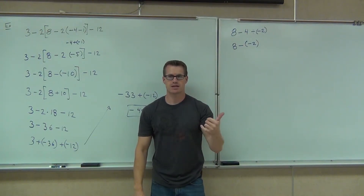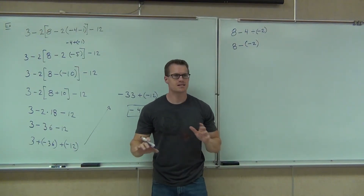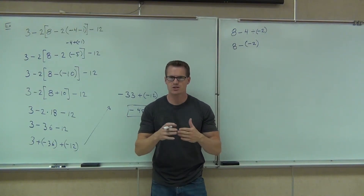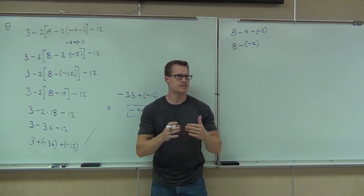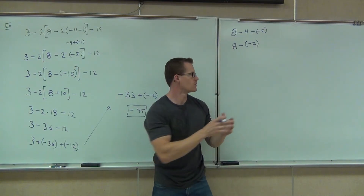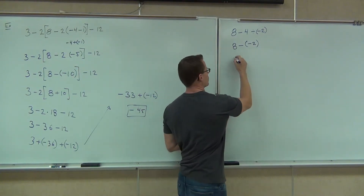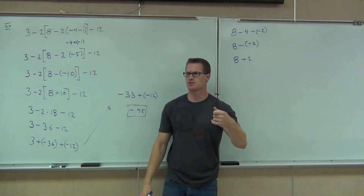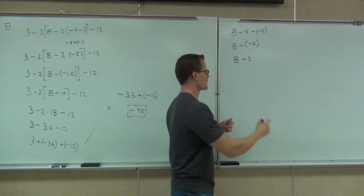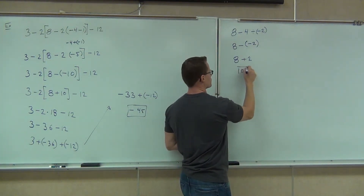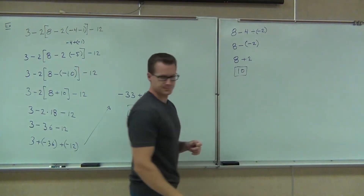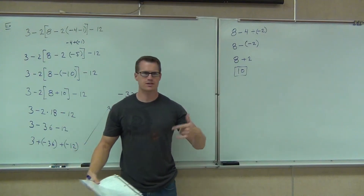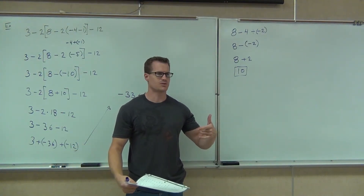Next we have 8 minus negative 2. We don't like seeing minus and negative — that's something we can't really work with. So we're changing that minus sign. What does it change to? 8 plus 2. Minus and negative becomes a plus. We're going to get 10. That's the right answer. Are you starting to get it more and more? Are you progressing?